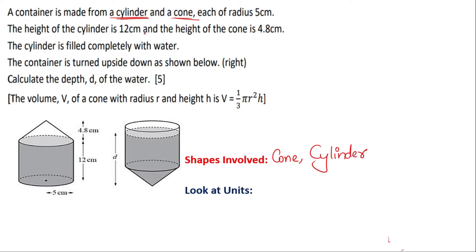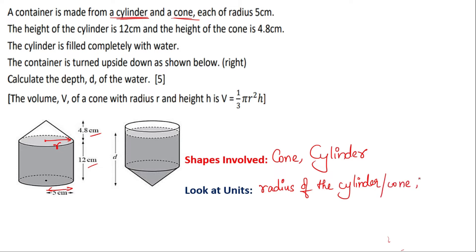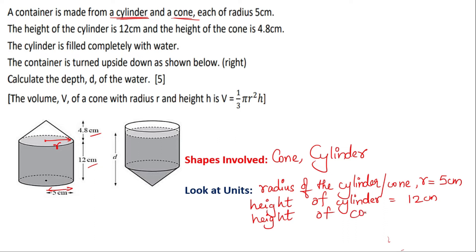Look at the units — are they all the same? Yes, they are all in centimeters. The radius of the cylinder is also equal to the radius of the cone, so the radius r equals 5 centimeters. The height of the cylinder is 12 centimeters and the height of the cone is 4.8 centimeters.